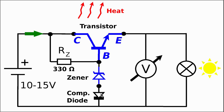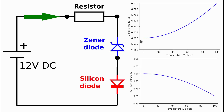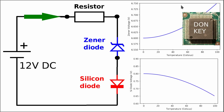Today we will look at the so-called temperature compensated zener diodes. This circuit here is very typical for old-school linear power supplies. Furthermore, we will compare the positive temperature coefficient of a zener diode with the negative temperature coefficient of a traditional silicon diode. Welcome to Donkey Learning IT where Dr. Donkey will teach you various topics in IT and applied electronics.